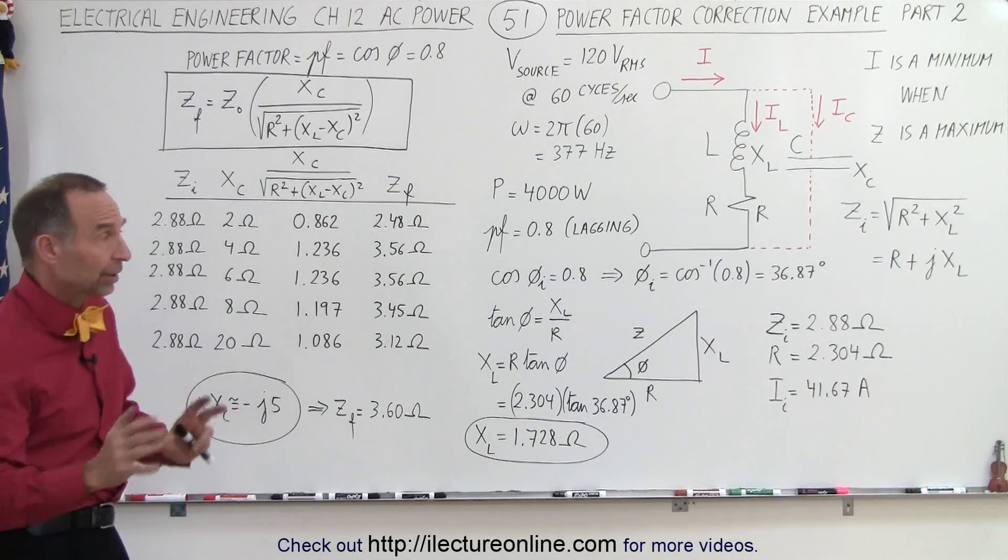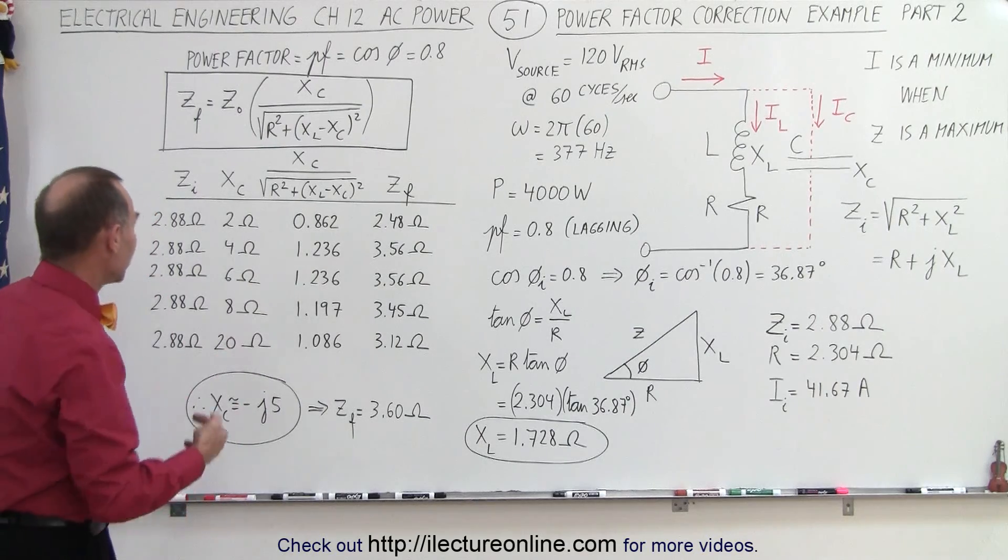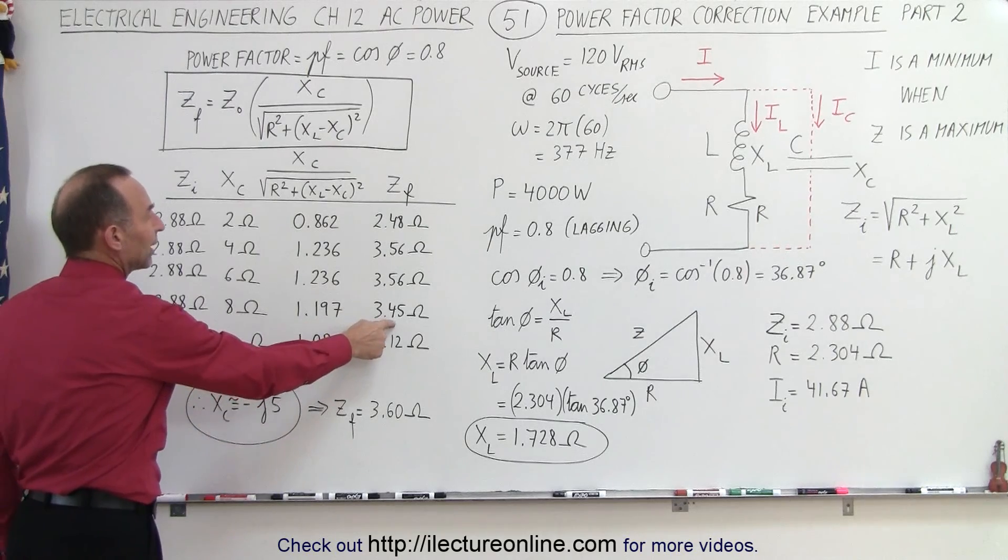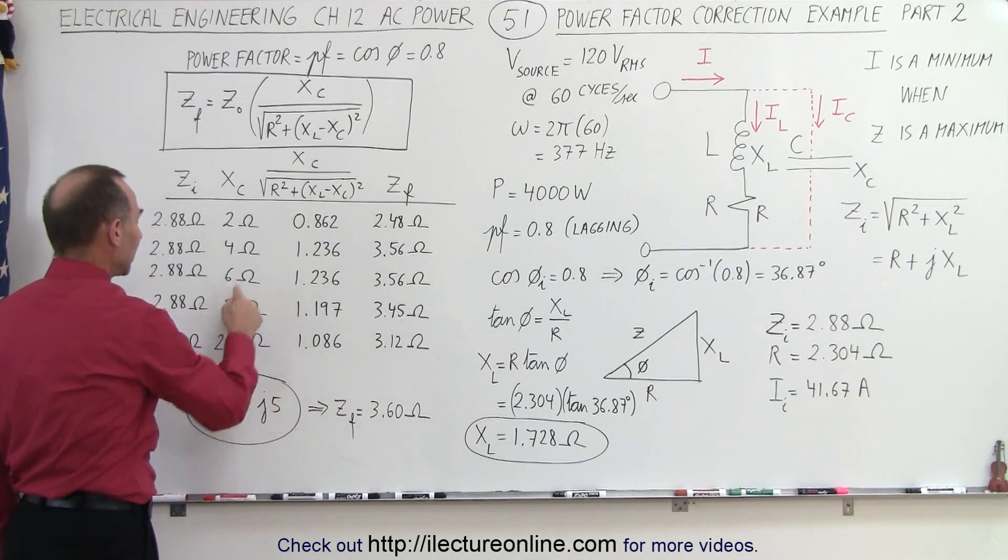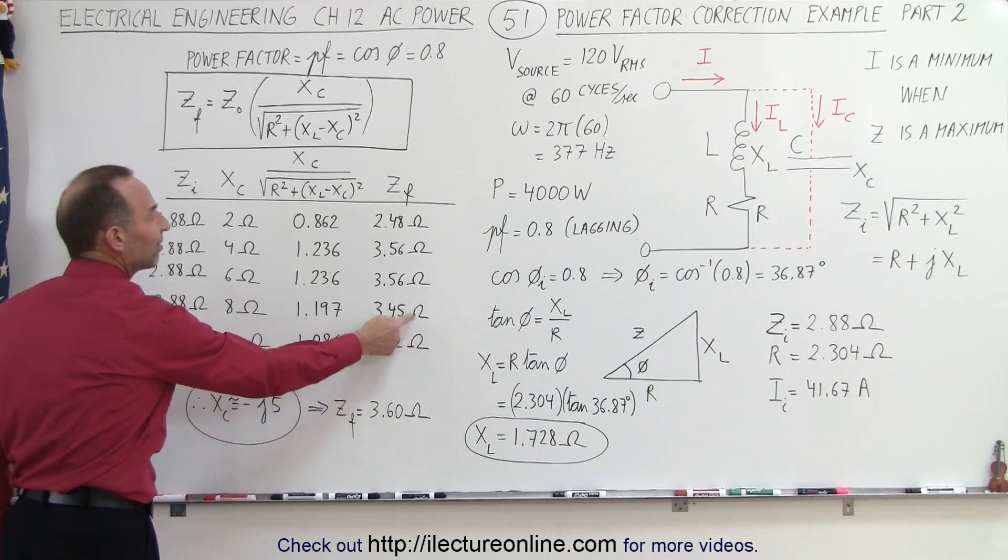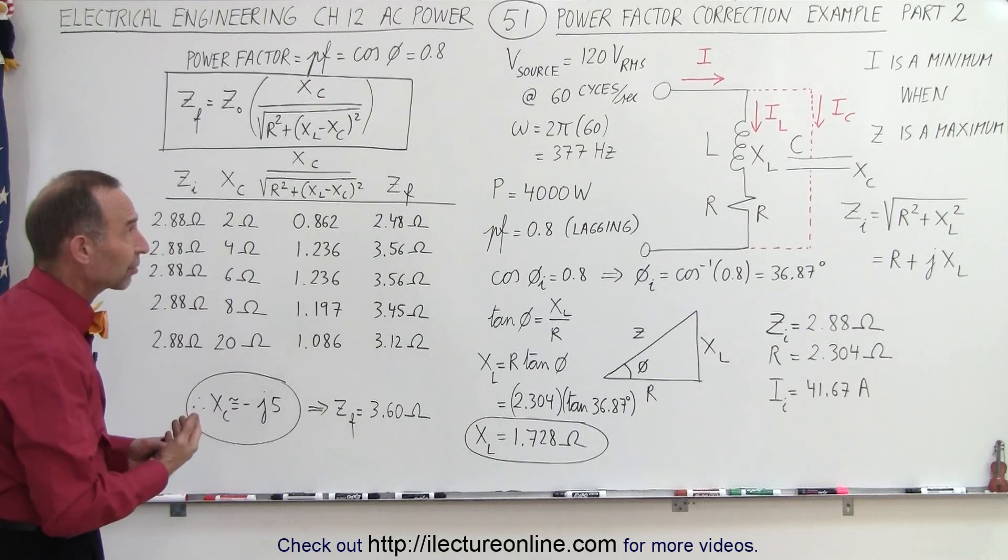Now we're going to calculate what that correct capacitor is later, we just want to see the trends here. You can see that if you continue to increase the capacitive reactance, you're starting to get less and less impedance. When you get all the way up to 20 ohms, our impedance is only 3.12 ohms, so that's not the optimum value for that correction factor.